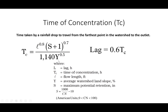The next variable in the time of concentration expression is Y, which is the average watershed slope. So in order to calculate lag, we need the maximum flow length L, S which is based on curve number, and the average watershed slope Y. We already have the curve number from which we can calculate S.